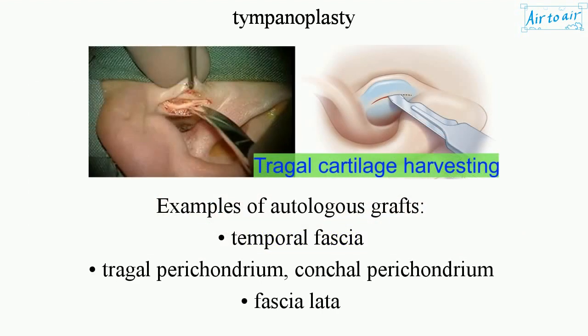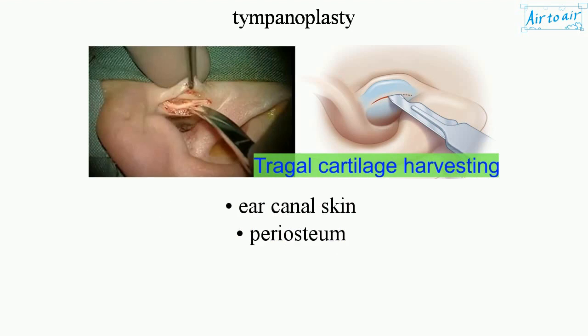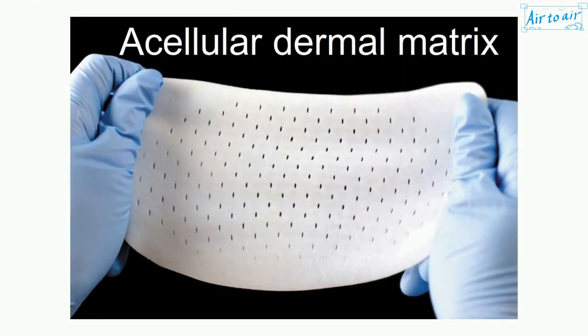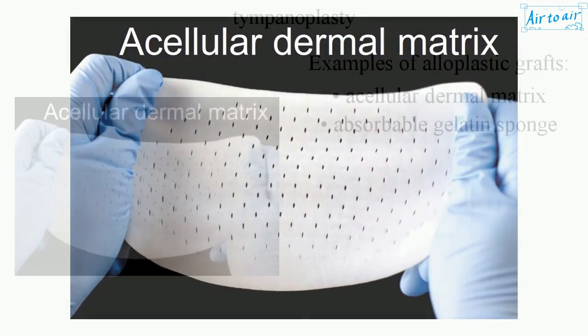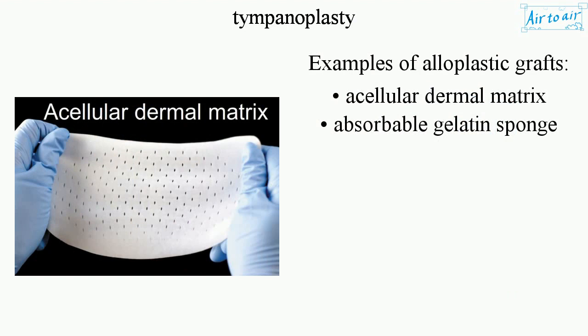Examples of autologous grafts include temporal fascia, tragal perichondrium, conchal perichondrium, fascia lata, ear canal skin, and periosteum. Examples of alloplastic grafts include acellular dermal matrix and absorbable gelatin sponge.